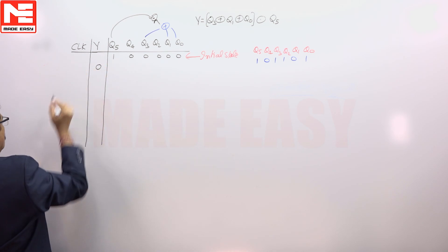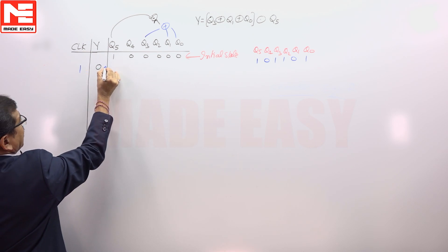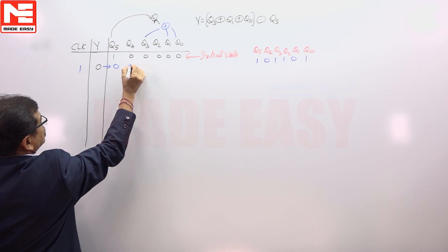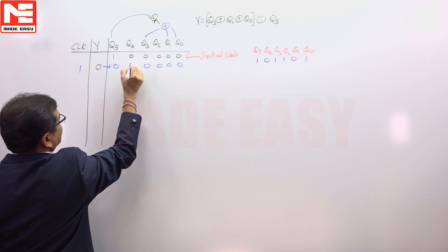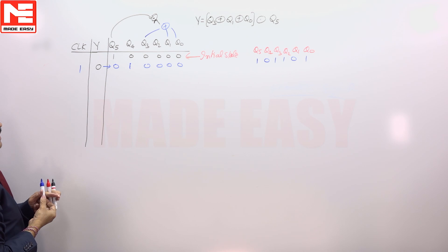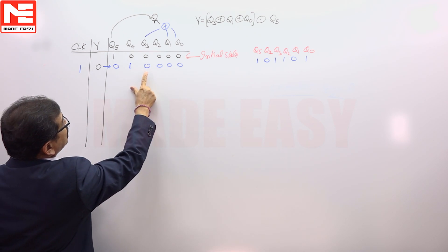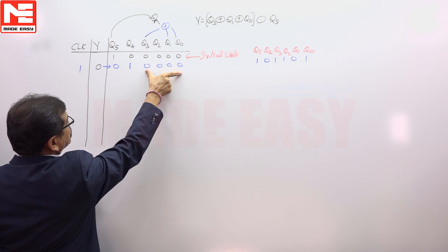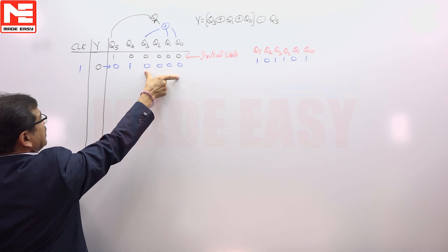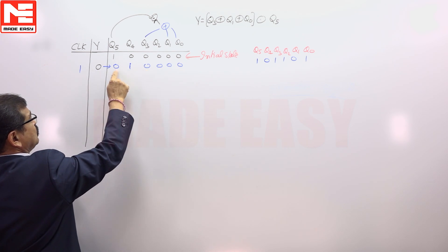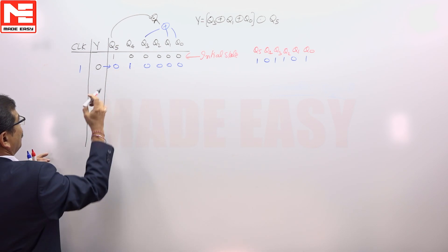Now if we apply the clock signal, the register content becomes 0 1 0 0 0 0. We then look at the exclusive OR between Q3, Q1, Q0, which is 0. It is exclusive NOR with 0, and 0 exclusive NOR with 0 is 1.